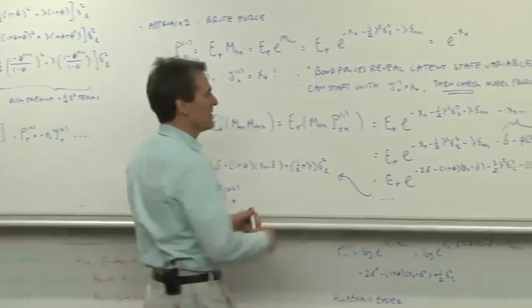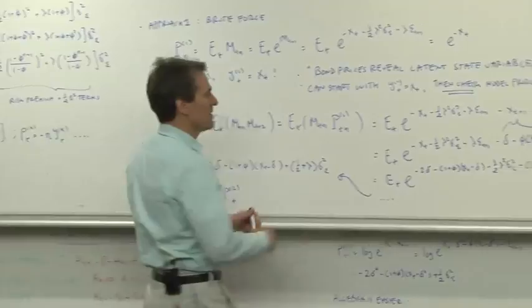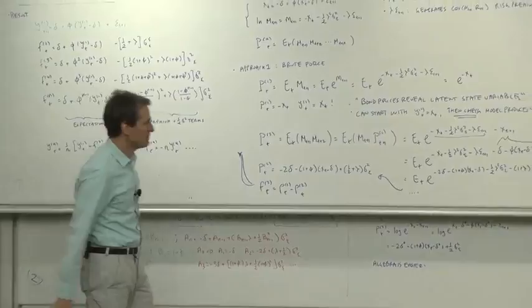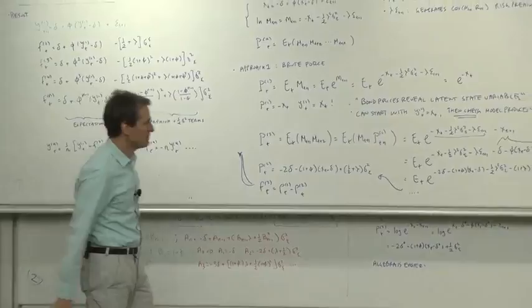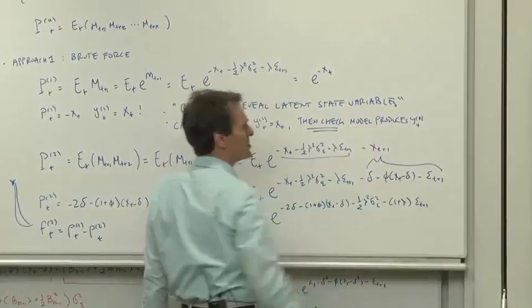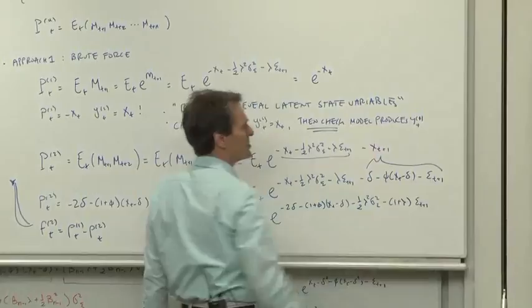So here we go, let's do the algebra. This first term is our mt plus 1. That xt plus 1 is, of course, the price of the one period bond next time. We have the one period bond pricing formula, we have the xt plus 1—that's the transition for x—that's what xt plus 1 turns into.